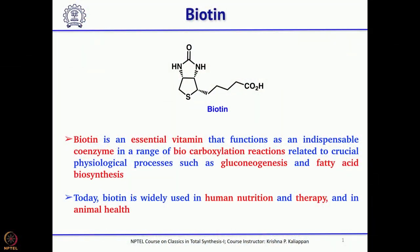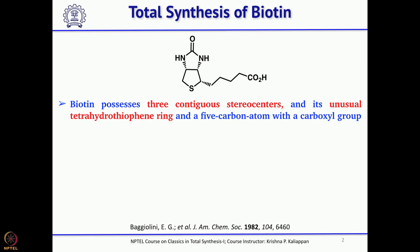Now we will move to the synthesis of another important vitamin called biotin. This biotin plays a very important role in physiological processes like gluconeogenesis and fatty acid biosynthesis. Today we will talk about one total synthesis of biotin, and when you look at this molecule, immediately you can see that there are 3 contiguous stereocenters.